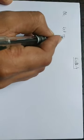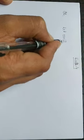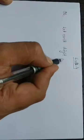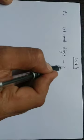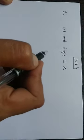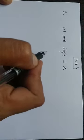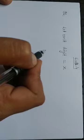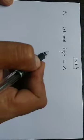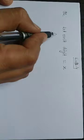So, let the unit digit be equal to x. We have given that one digit is three times the other digit.